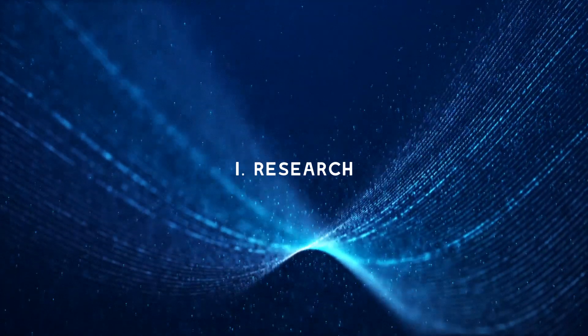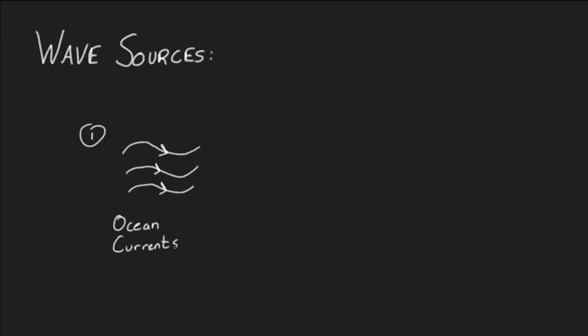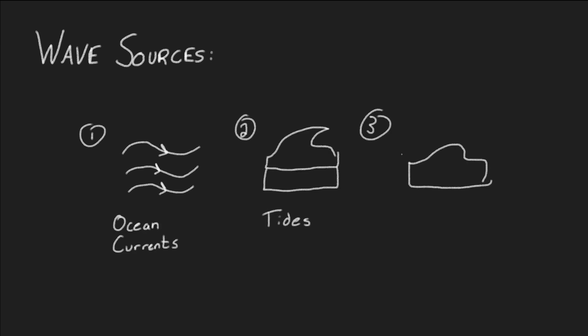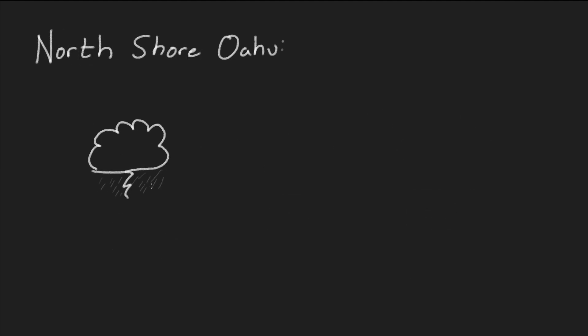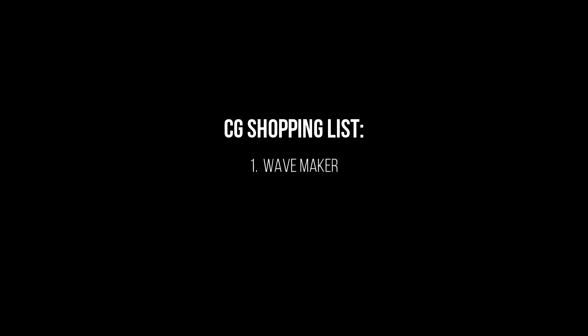Part 1: Research. In order to effectively create waves in Blender, I first have to know how they form in the real world so I can replicate it. Here's a quick summary of what I learned. Waves originate from a few different sources: ocean currents, tides, and wind. Often the waves on the north shore of Oahu are caused by distant storms combined with the powers of ocean currents. This combination allows for the waves to be very powerful, which is part of the reason that they break like they do. So we know if we want to replicate these waves, the first thing we'll need is a very powerful wave source.